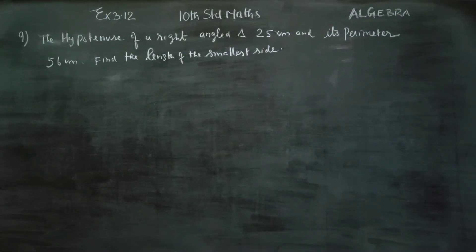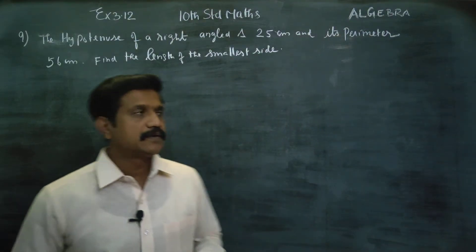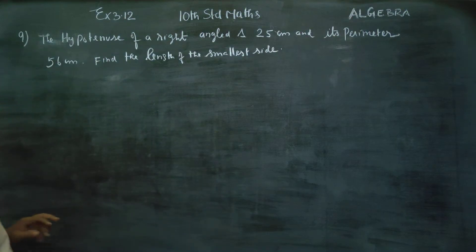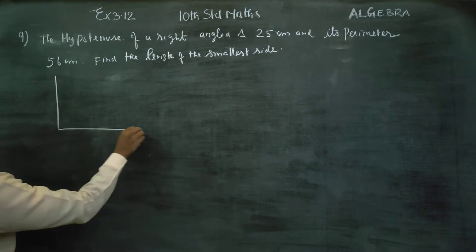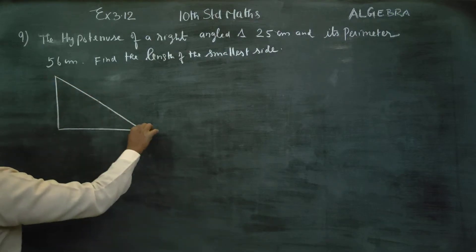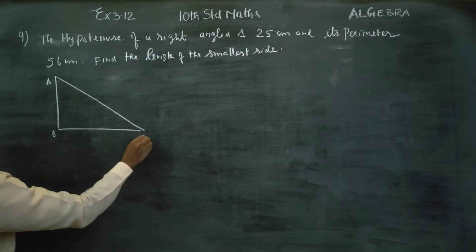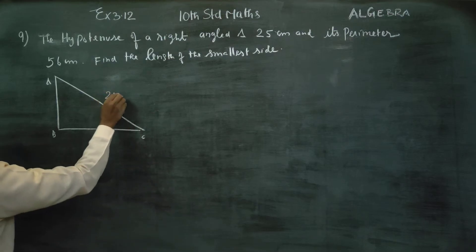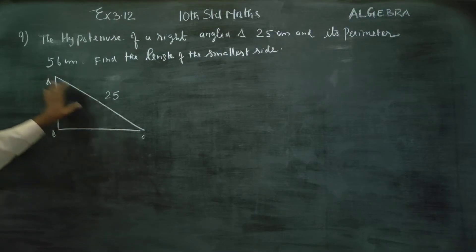Dear 10th standard students, in exercise number 3.12, sum number 9: the hypotenuse of a right-angled triangle is 25 centimeters. Let us consider this right-angled triangle ABC, where the hypotenuse AC is 25 centimeters, and its perimeter is 56 centimeters.